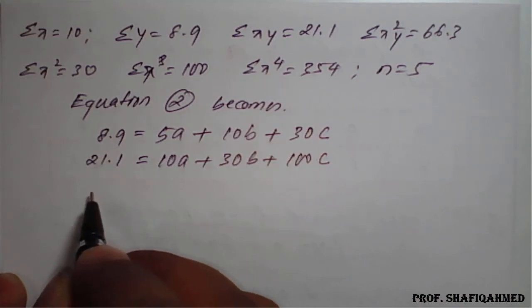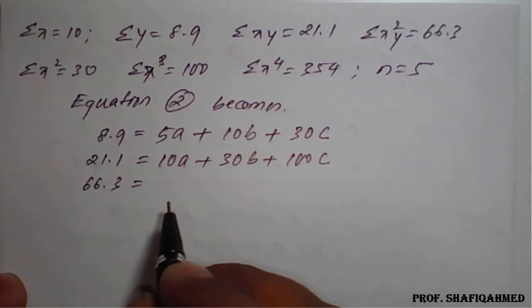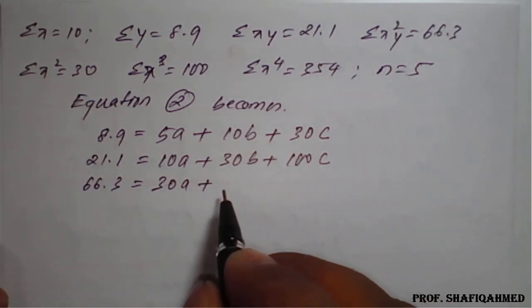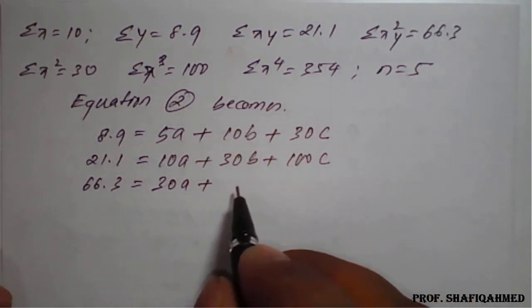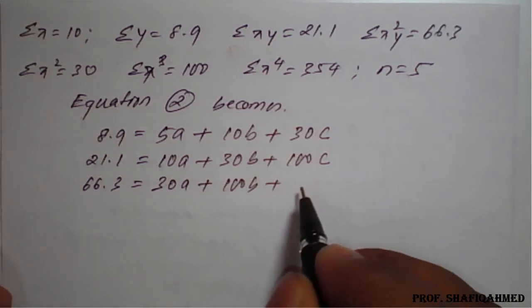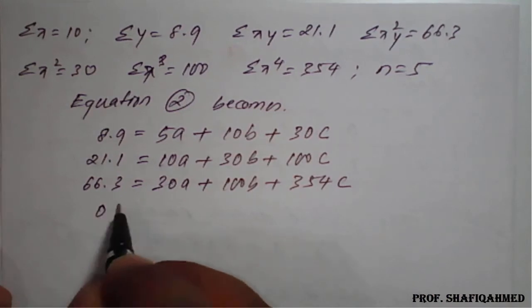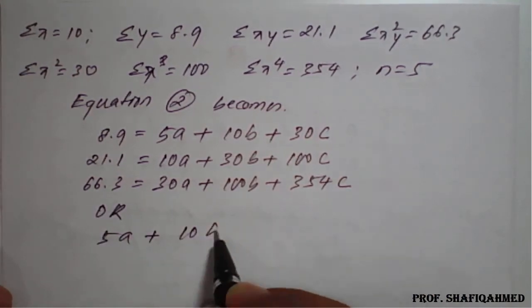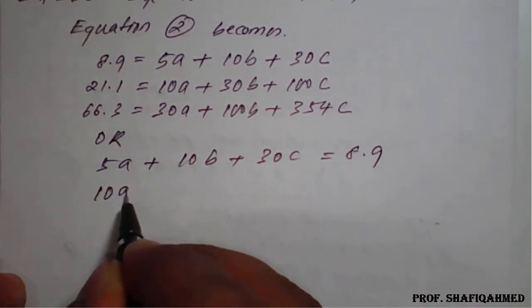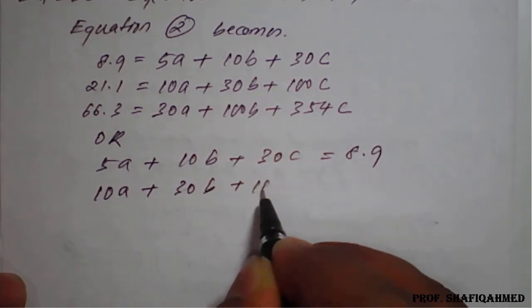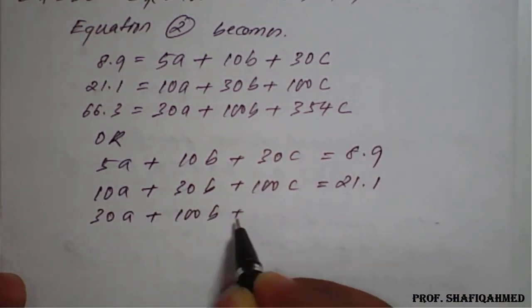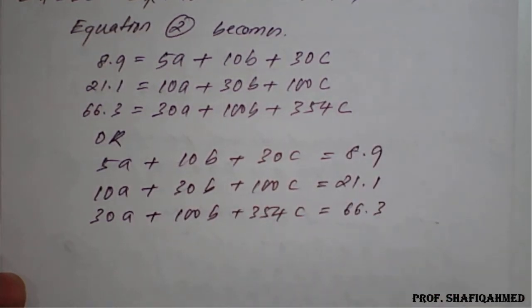On rearrangement, the system of equations becomes: 5a + 10b + 30c = 8.9; 10a + 30b + 100c = 21.1; 30a + 100b + 354c = 66.3.